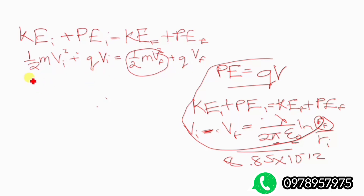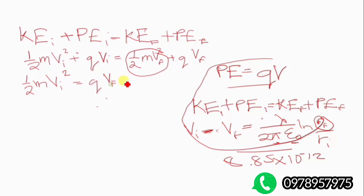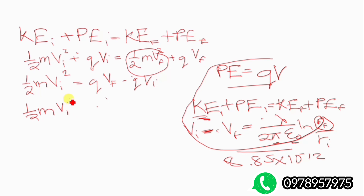We move terms to get one-half m v_i squared on one side. The mass is the mass of a proton and the charge is the charge of the proton. Moving q V final minus q V initial to the other side, and factorizing, we get: one-half m v_i squared equals q times (V final minus V initial).